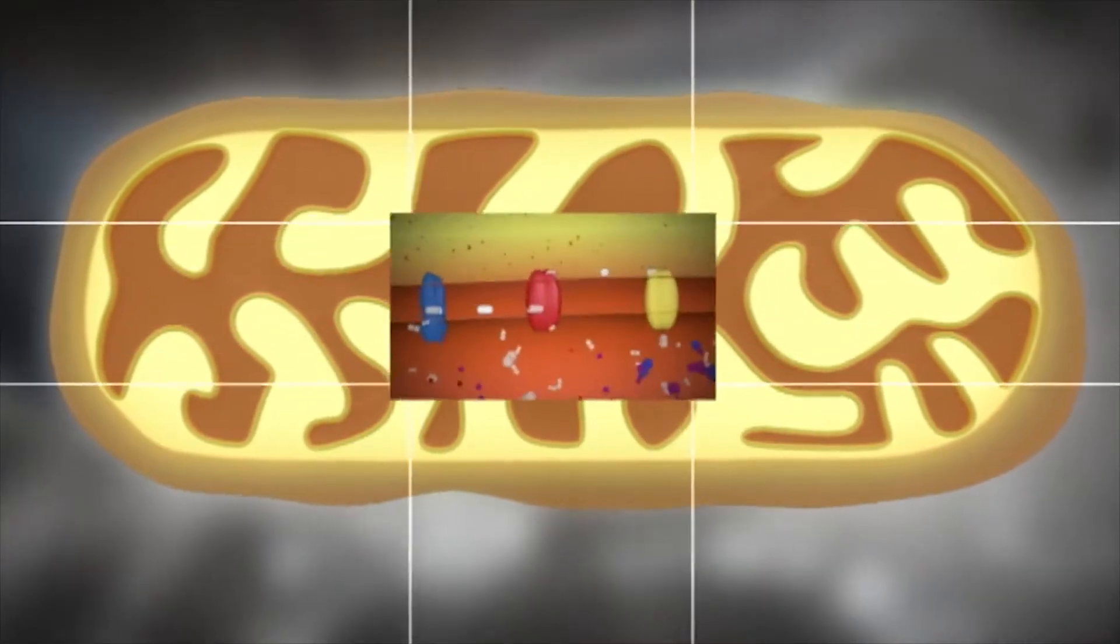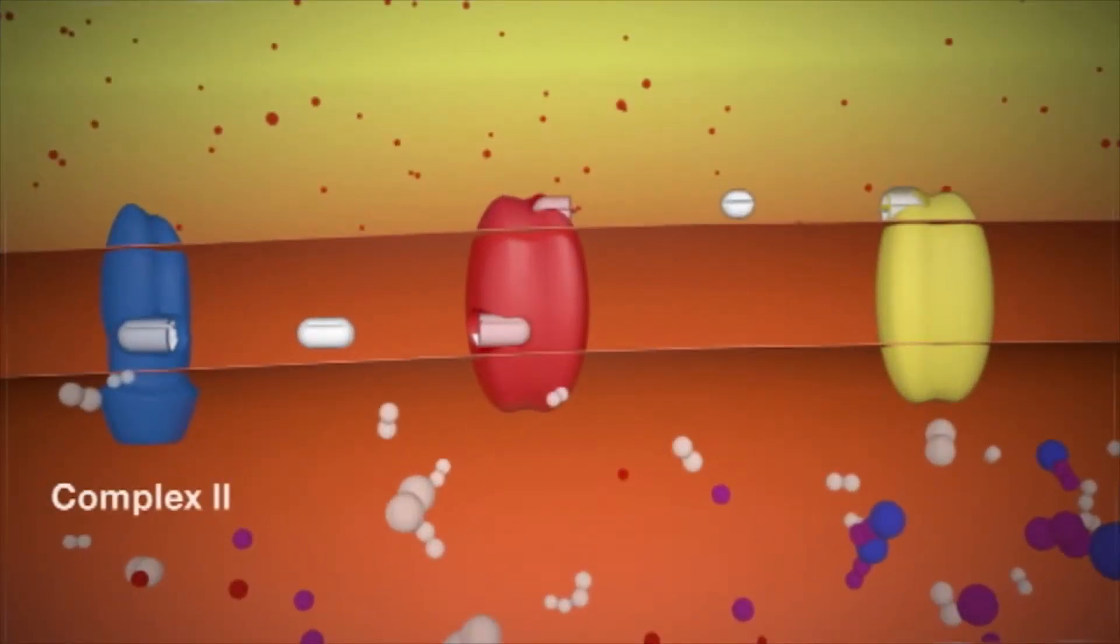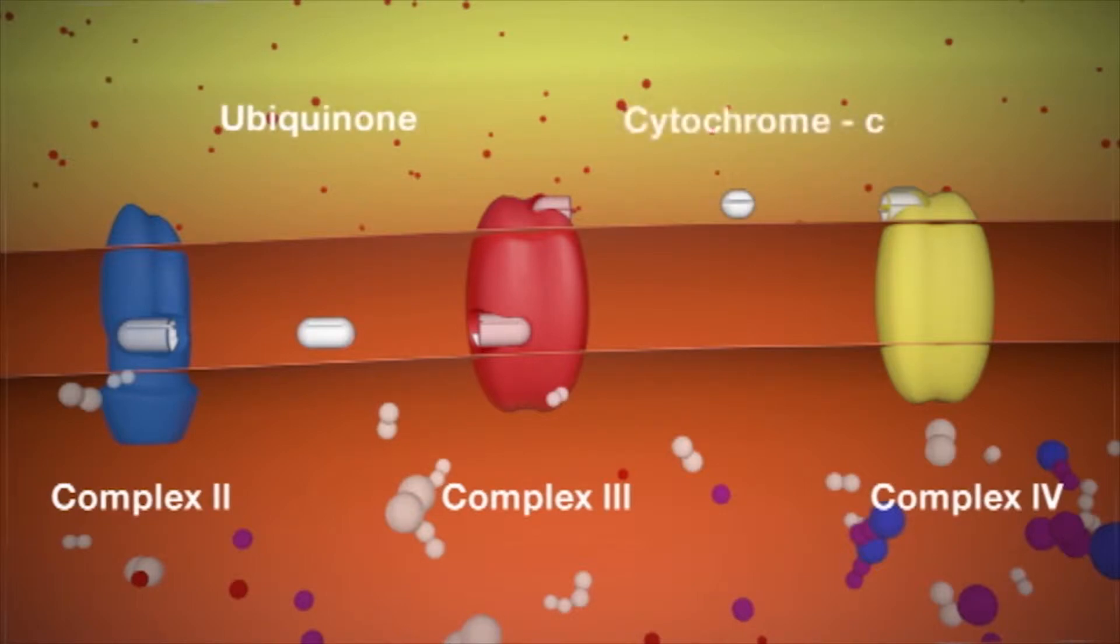The main players in the respiratory chain are located in the inner membrane. As complex I is not involved in the process, we will concentrate on complexes II, III and IV, and two electron shuttles, ubiquinone and cytochrome C.